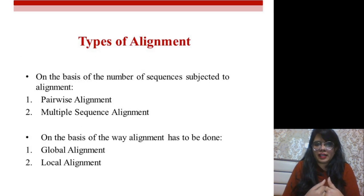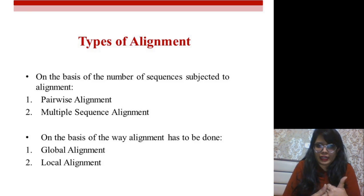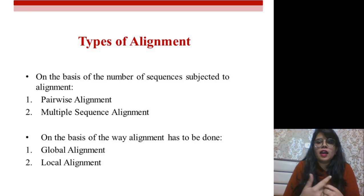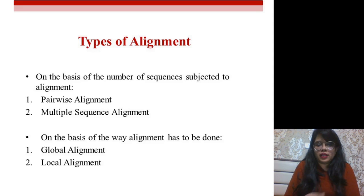There are two different types of categorizations. First is on the basis of the number of sequences being aligned: pairwise alignment and multiple sequence alignment. Second is on the way the alignment has been done: global alignment or local alignment.